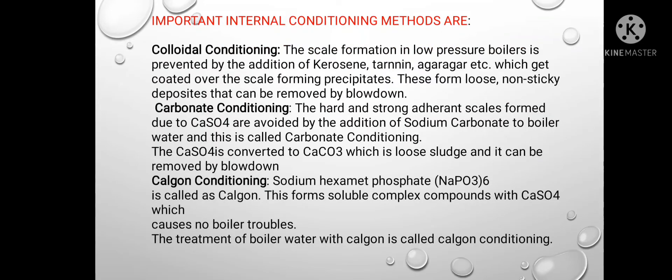Now we will see important internal conditioning methods. First, colloidal conditioning — scale formation in low-pressure boilers is prevented by the addition of kerosene, tannin, agar-agar, etc., which get coated over the scale-forming precipitates. These form loose, non-sticky deposits that can be removed by blow-down.